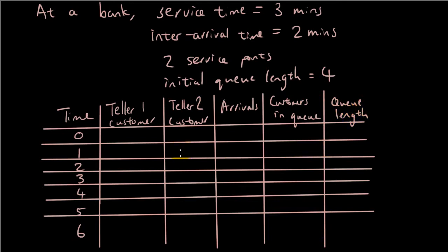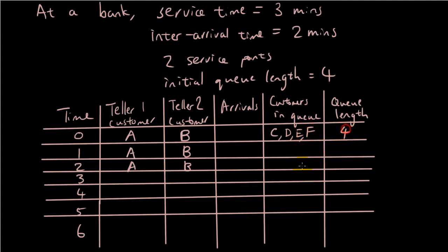So because we have two tellers, teller one could be serving customer A, and it takes three minutes to serve so it'll appear three times. And teller two could be serving customer B. And let's say no one arrives at the start, and there are four people in the queue — so we've got C, D, E, F in the queue, and there are four people in the queue.